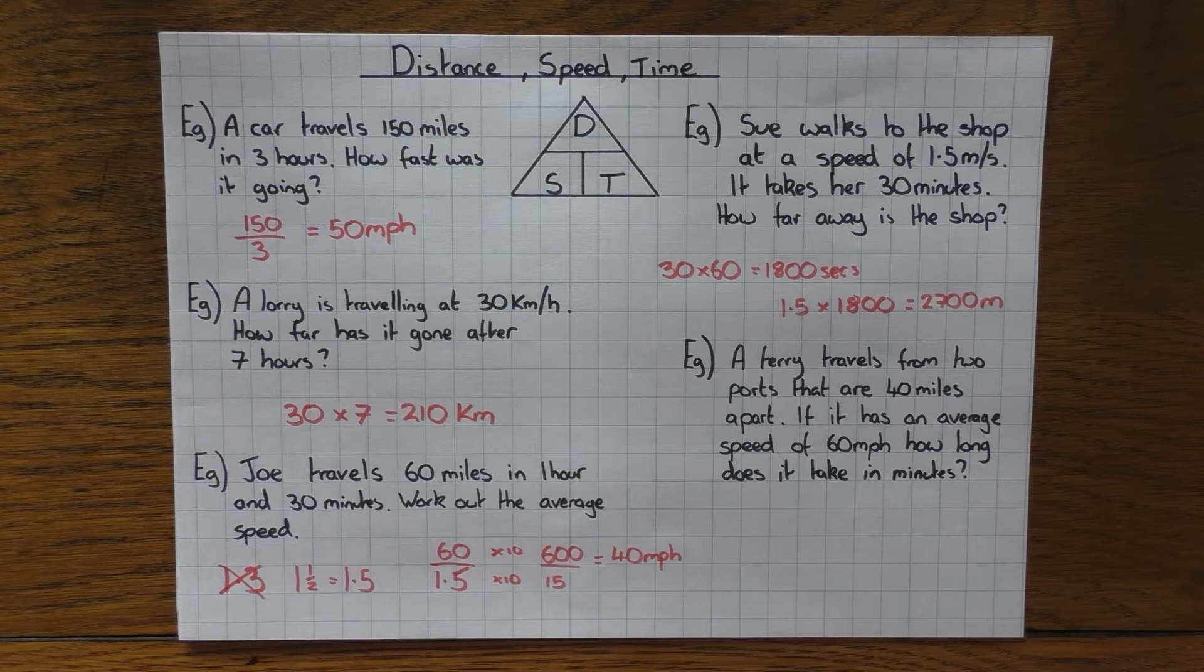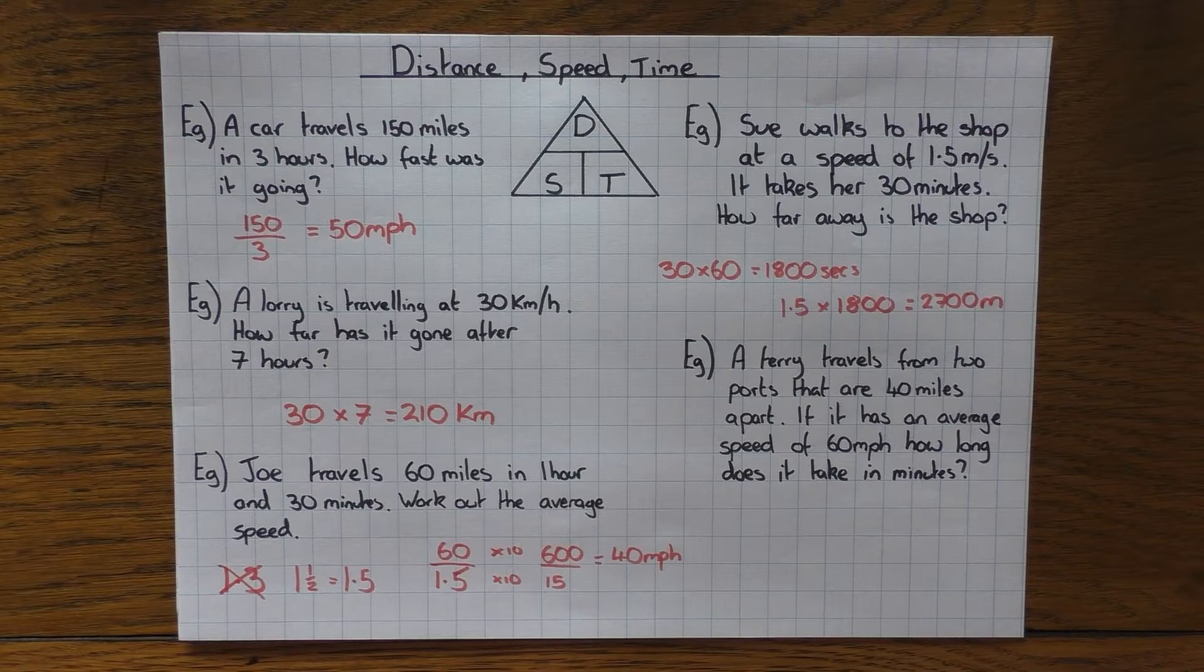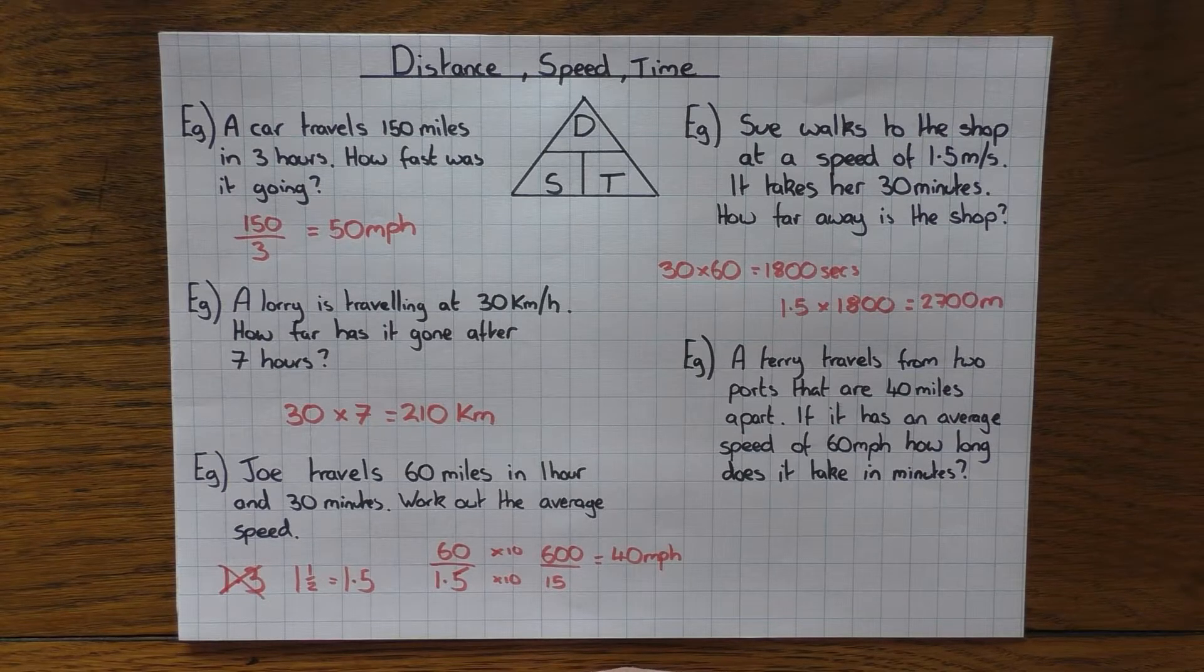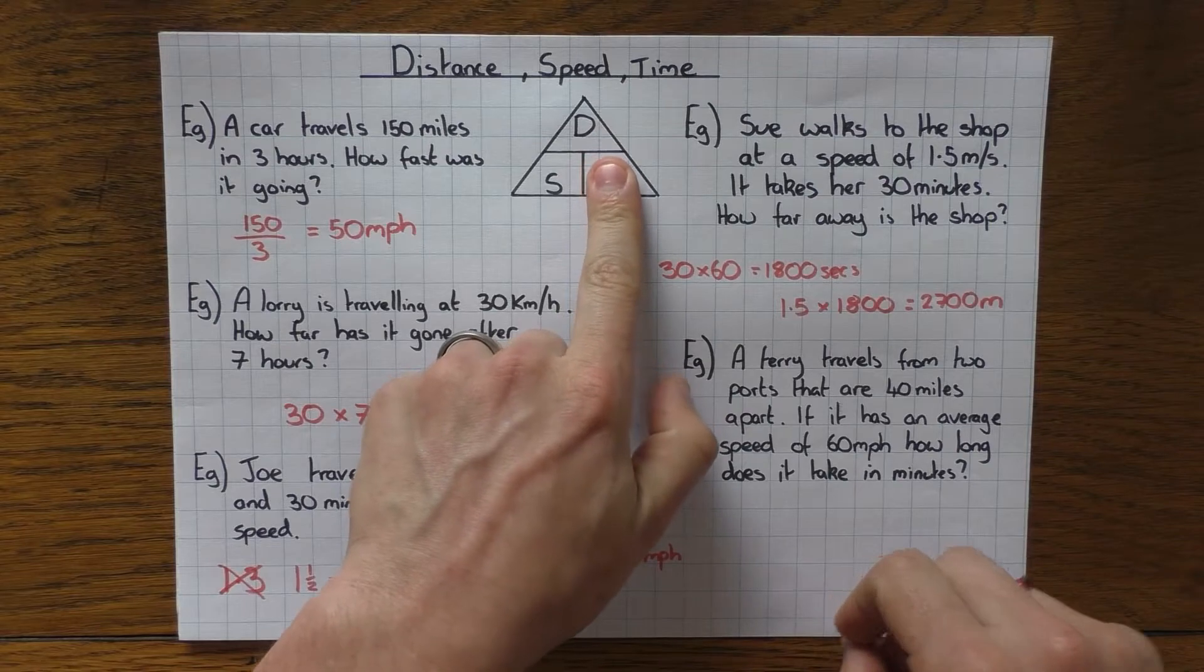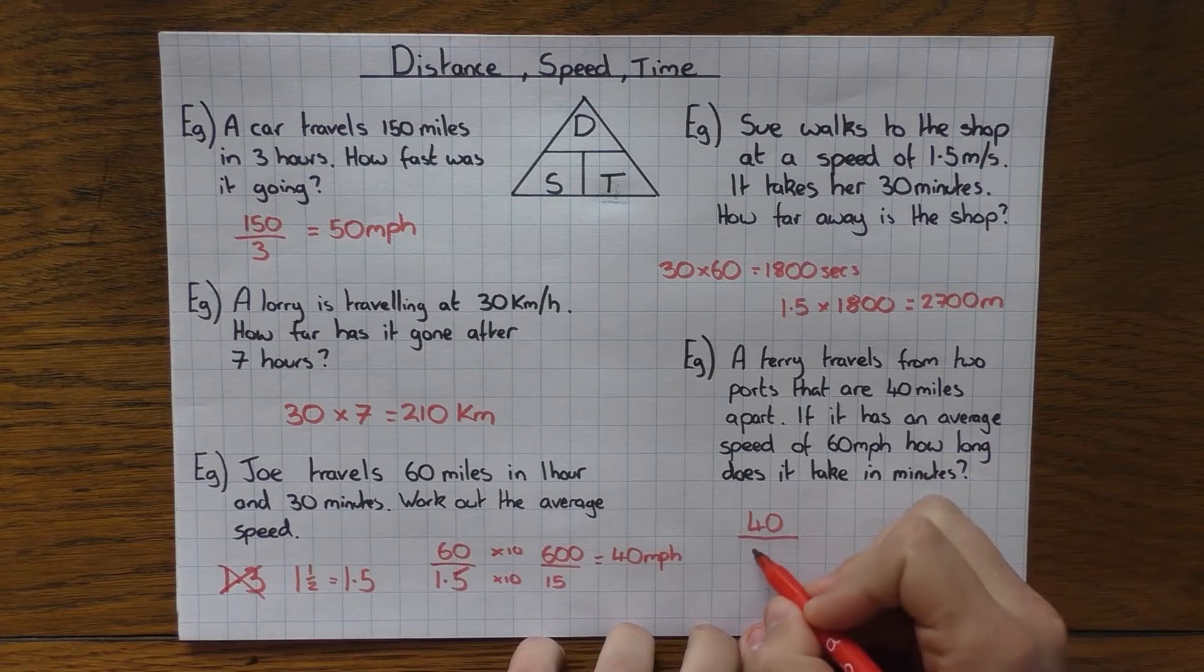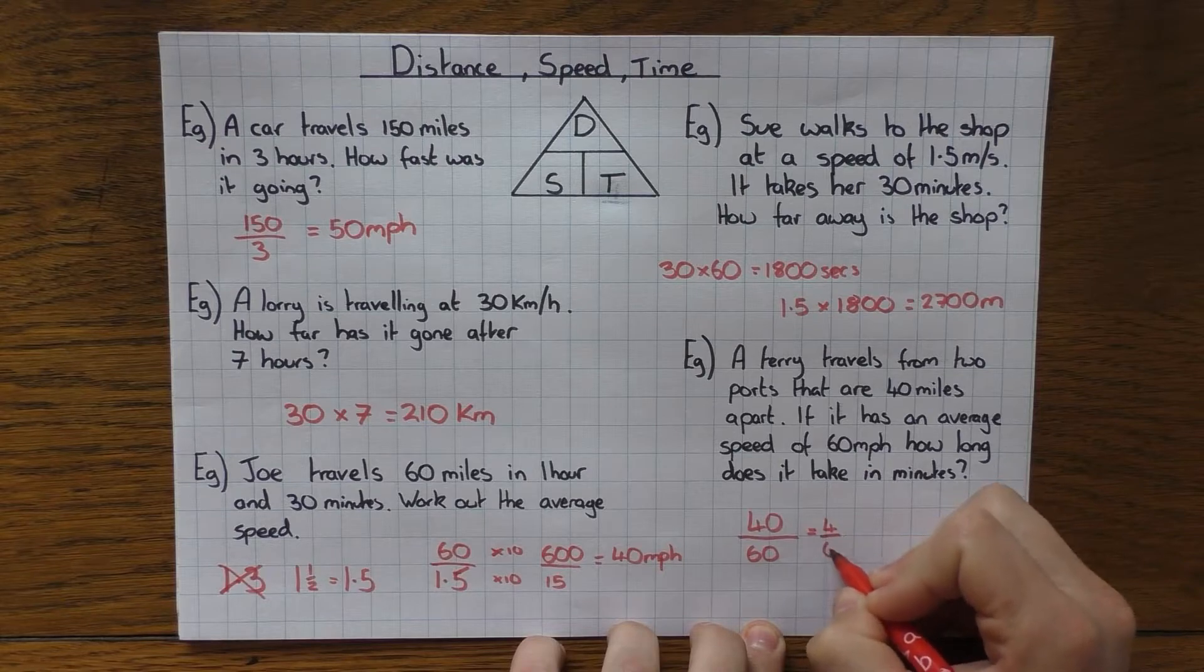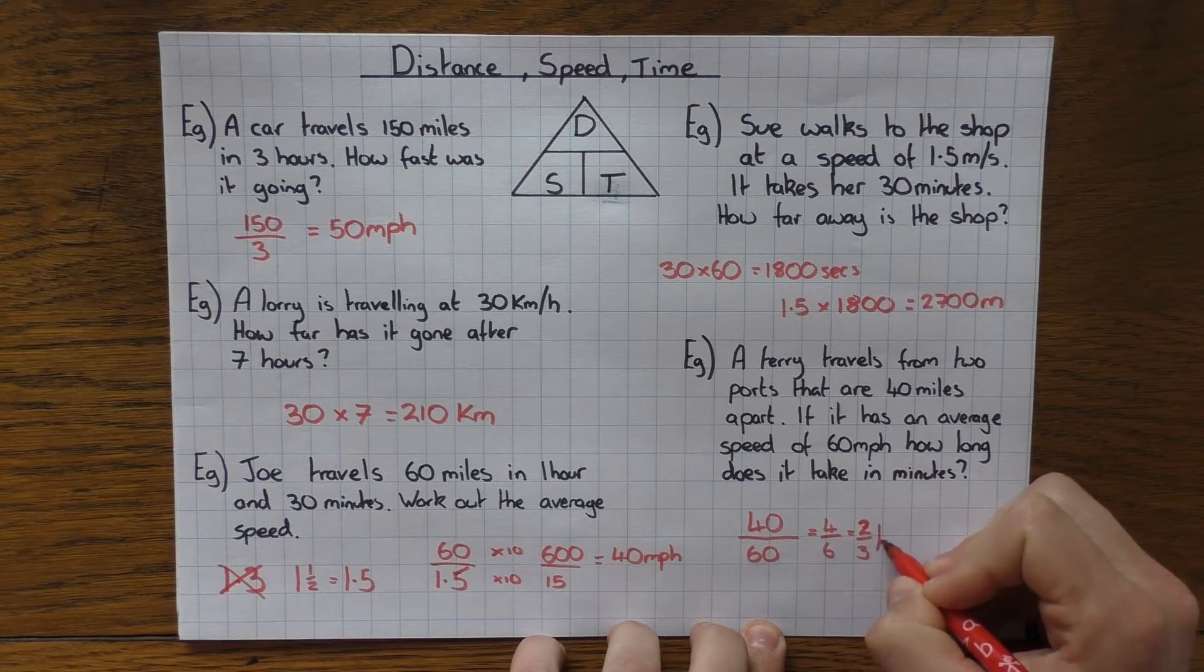And the final non-calculator one, a ferry travels from two ports that are 40 miles apart. If it has an average speed of 60 miles per hour, how long does it take in minutes? So this one here, I'm going to work it out in hours first and then convert it into minutes. So it says, how long does it take? So I'm after the time. So I cover up T, distance divided by the speed. So the distance is 40 divided by the speed. And the speed was 60. And if you simplify that, we'll divide it by 10. You're going to have four, six, halve them. So you're going to have two thirds of an hour.